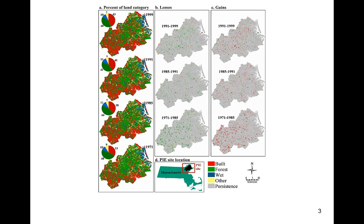In part 1, we investigated land change in the Plum Island ecosystems, which is one of several sites in the National Science Foundation's long-term ecological research network. We evaluated land change based on the comparison between maps at multiple time points. Intensity analysis was used to make statements about the change according to the available data. However, the previous video assumed the data were correct.